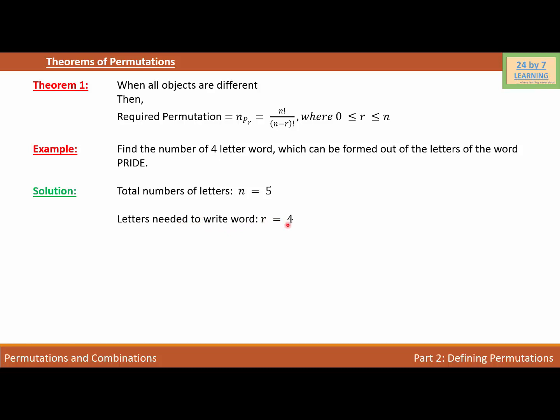Now what we need to do, we need to find how many words we can create using four letters out of five at a time. So we will write 5P4 is equal to factorial 5 over factorial 5 minus 4.